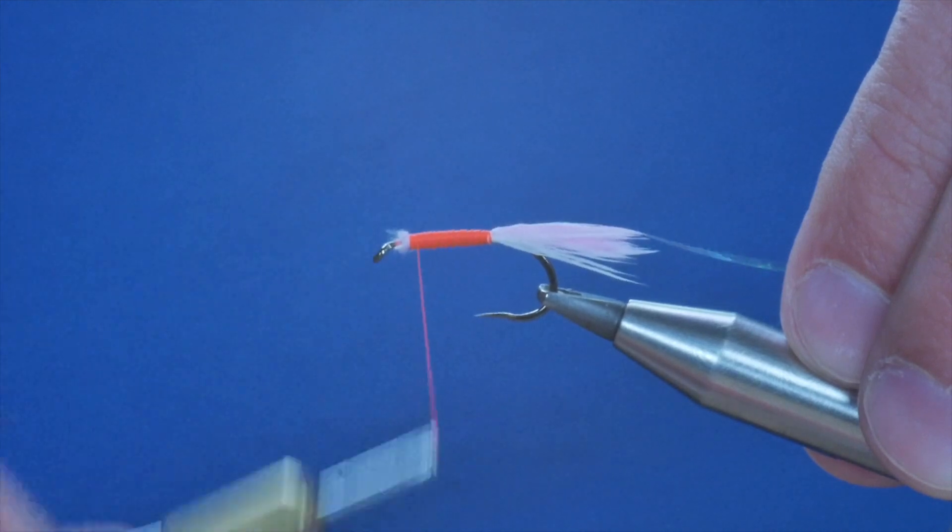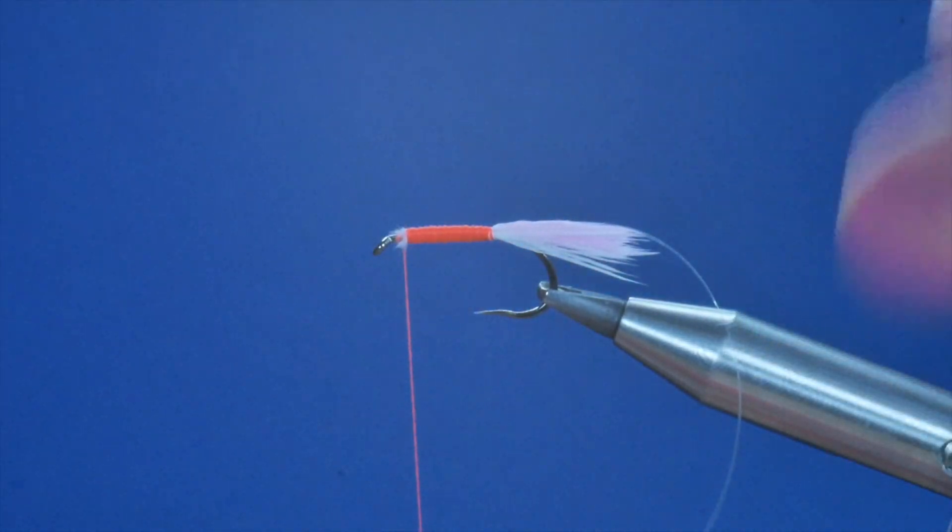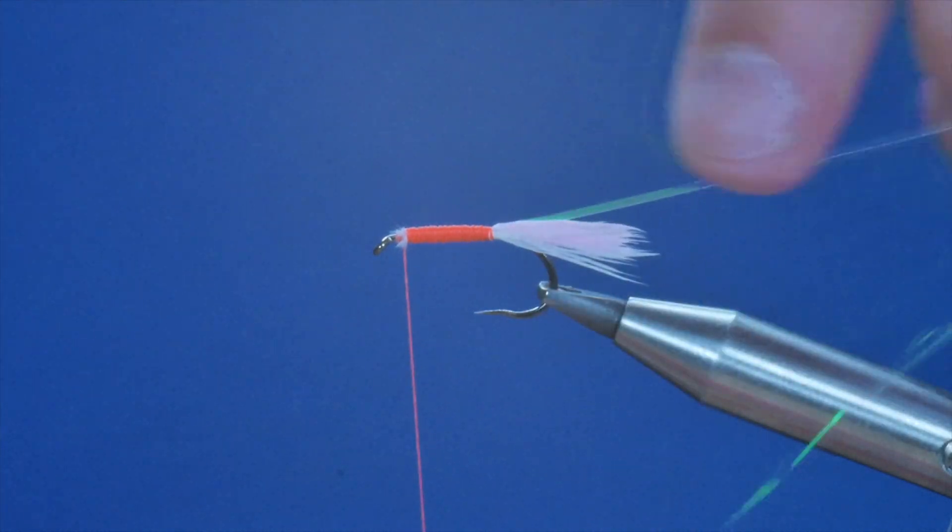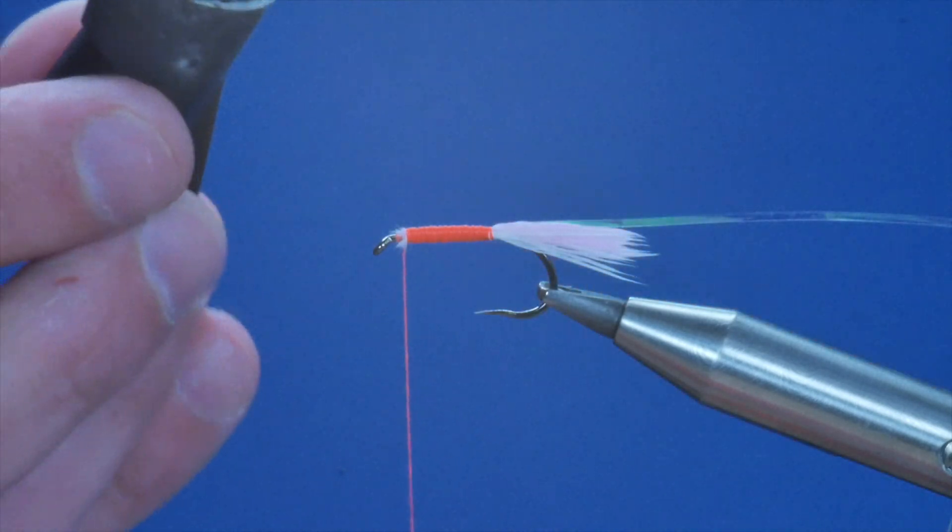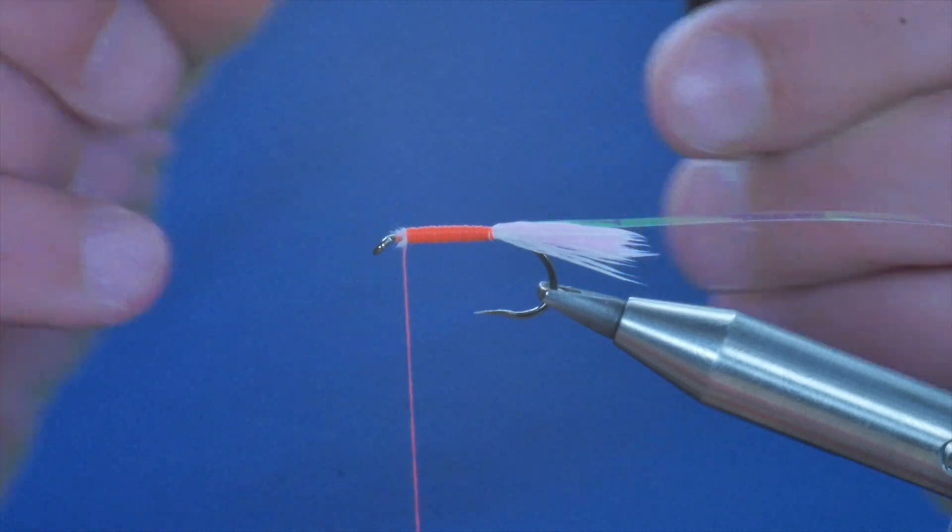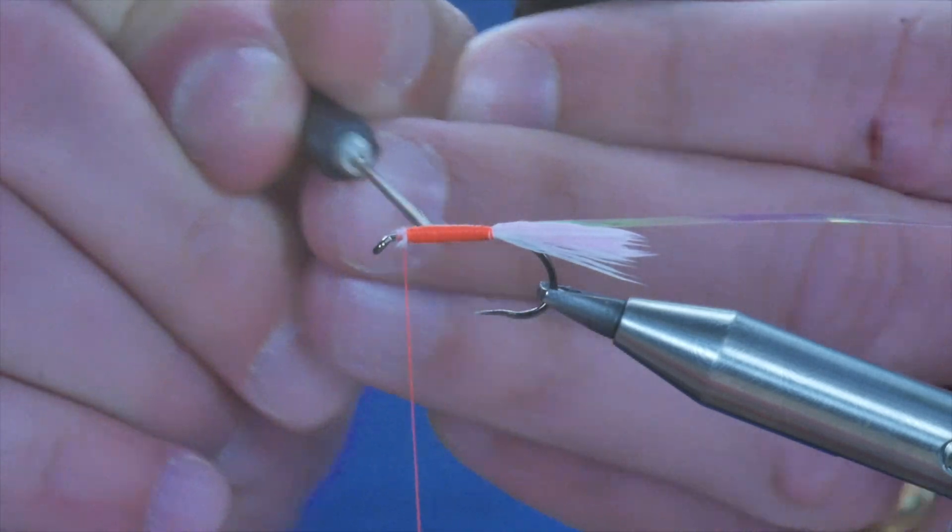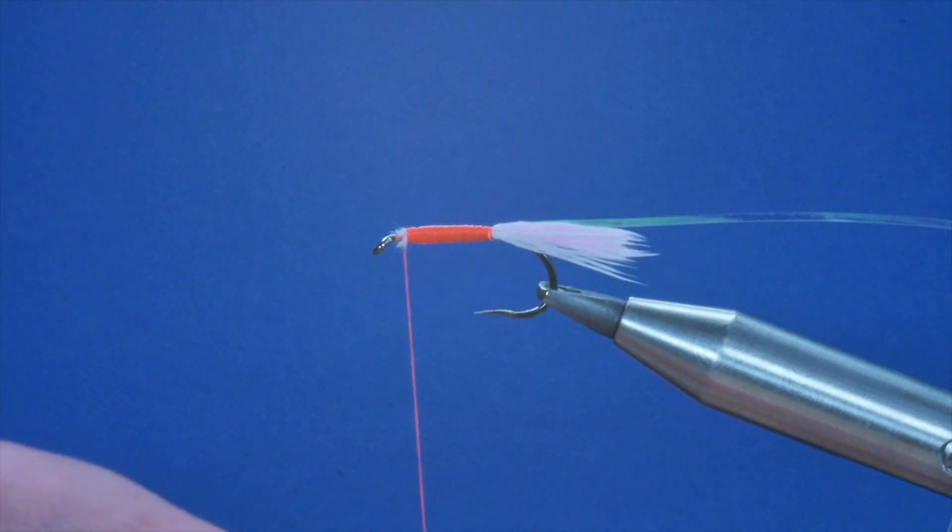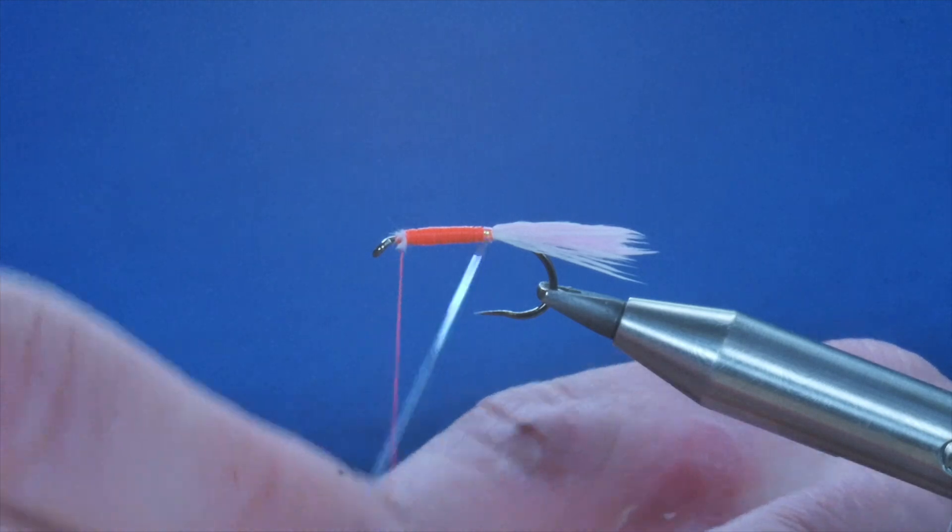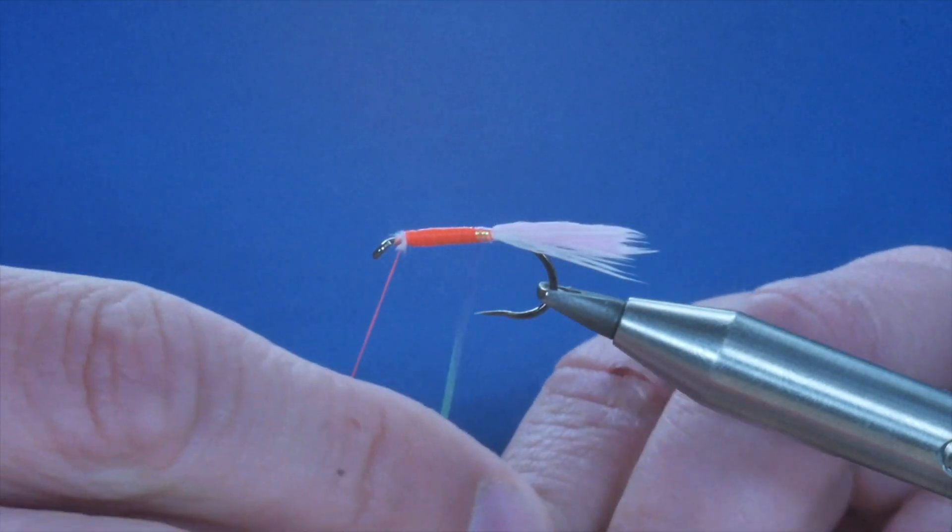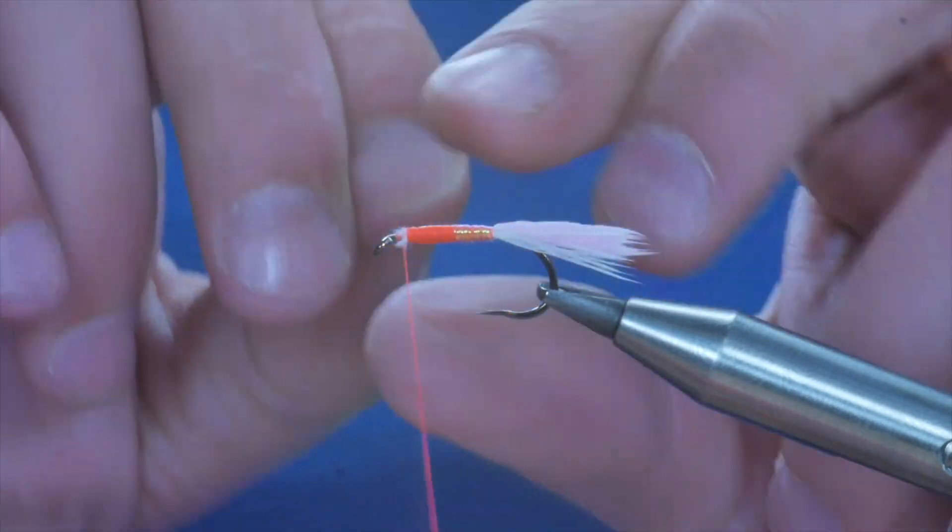Now just taking some time there with the body because I want that block of color here. What I used to do was just wrap that up and away I'd go, I'd finish the fly off, but once it's been hit by fish a few times, the rib just comes away and the fly's ruined. So what I do now is just a little bit of super glue onto the shank and then I can start my wraps. Now I want complete coverage, but I don't want to overlap my tinsel too much because I want that orange to really show through on the fly.